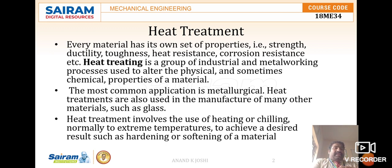The change may be in physical or chemical properties. The most common application is in metallurgy. Heat treatment is also used in the manufacture of components and other materials such as glass. Heat treatment involves heating or chilling — normally to extreme temperatures — to achieve a desired result such as hardening or softening of the material. So heat treatment means not only raising the temperature of the metal, but also cooling it, which is called chilling. Heat treatment means either increasing or decreasing the temperature to get the desired results.